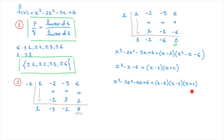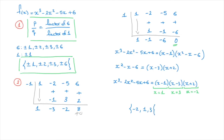This allows us to quickly see all of the roots, or zeros, of this polynomial. The factor x minus 1 shows us that 1 is a root; x minus 3 shows us that 3 is a root; and x plus 2 shows us that negative 2 is a root. So all of the zeros of this polynomial are negative 2, 1, and 3. That's the final answer — we've found all of the zeros of this polynomial thanks to the rational root theorem. Let's look at another example.